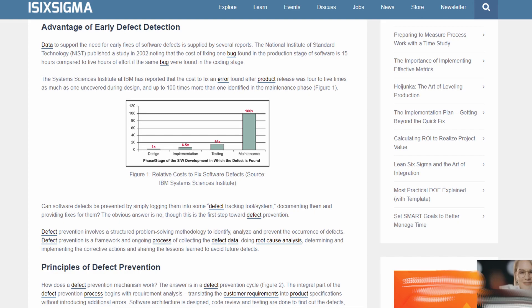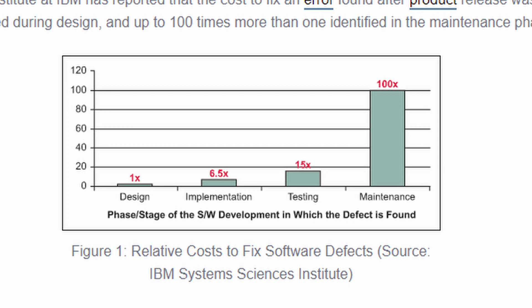The System Sciences Institute at IBM did a study and found that if a bug was found in development, let's say it cost $100 to fix. If the bug made it to the implementation phase, it was about 6.5 times more expensive — so that $100 bug now costs $650. If it made it as far as QA when testers were testing, it was 15 times more expensive — now $1,500. However, if the bug made it all the way to production, it became 100 times more expensive — a $100 bug is now $10,000 to fix. Those are the raw numbers from their study.